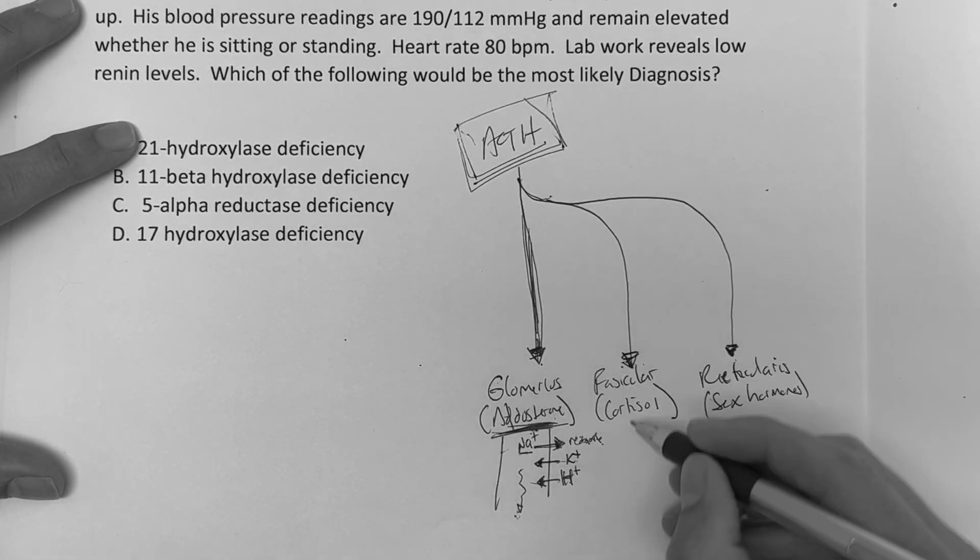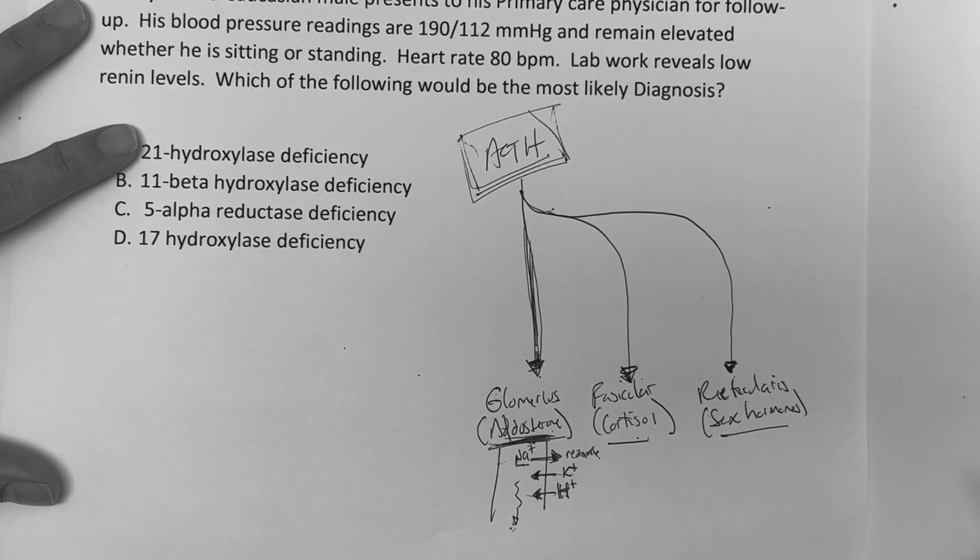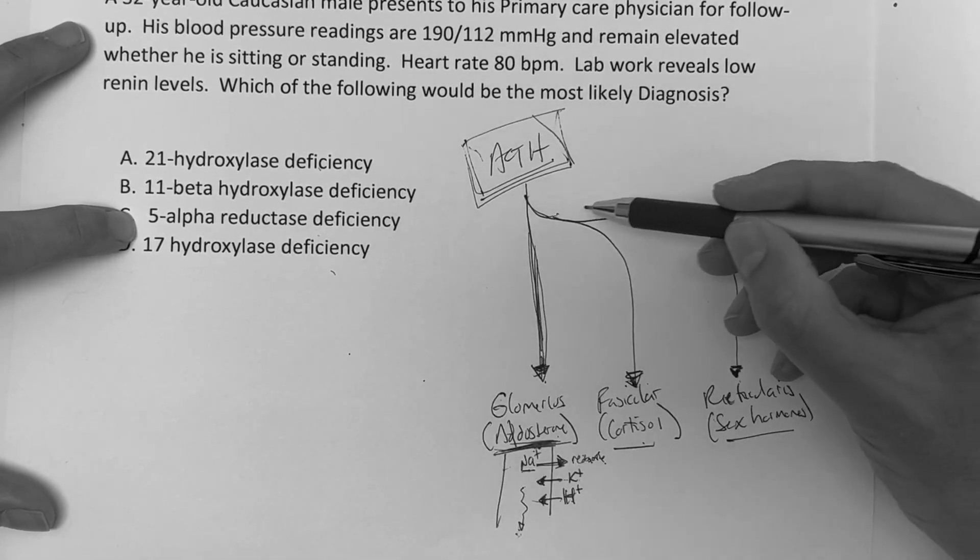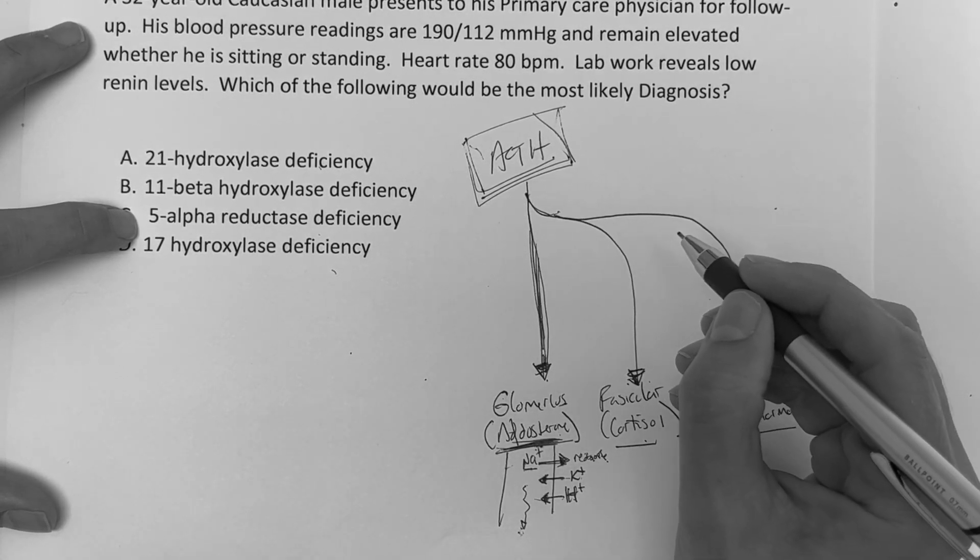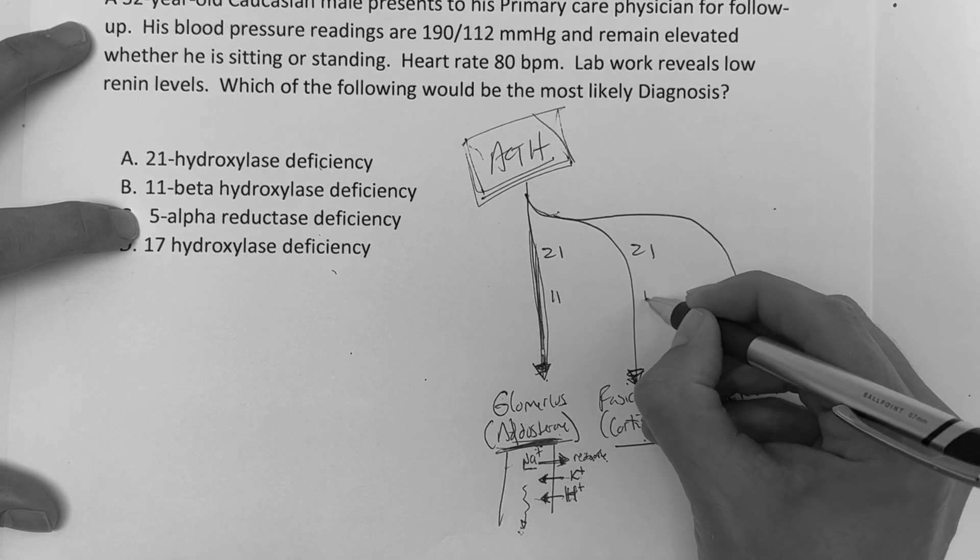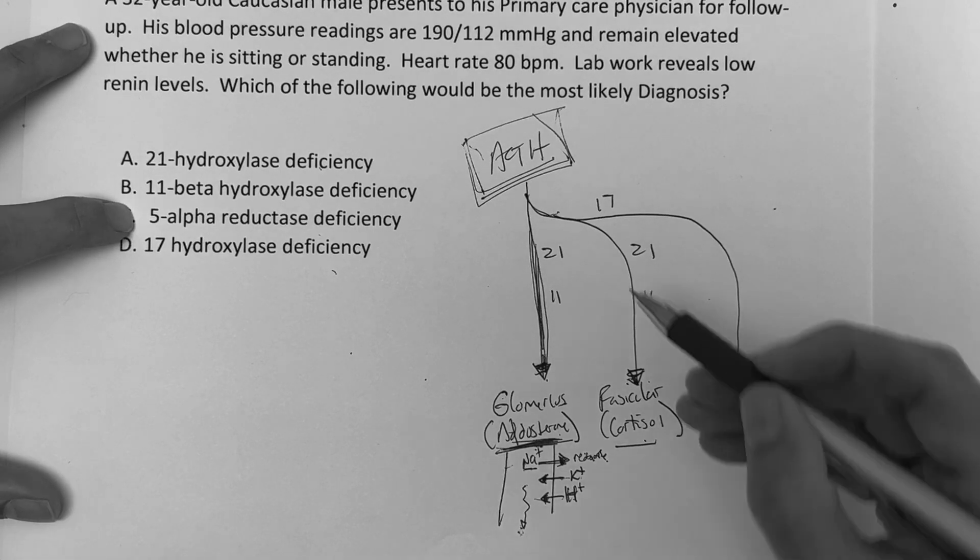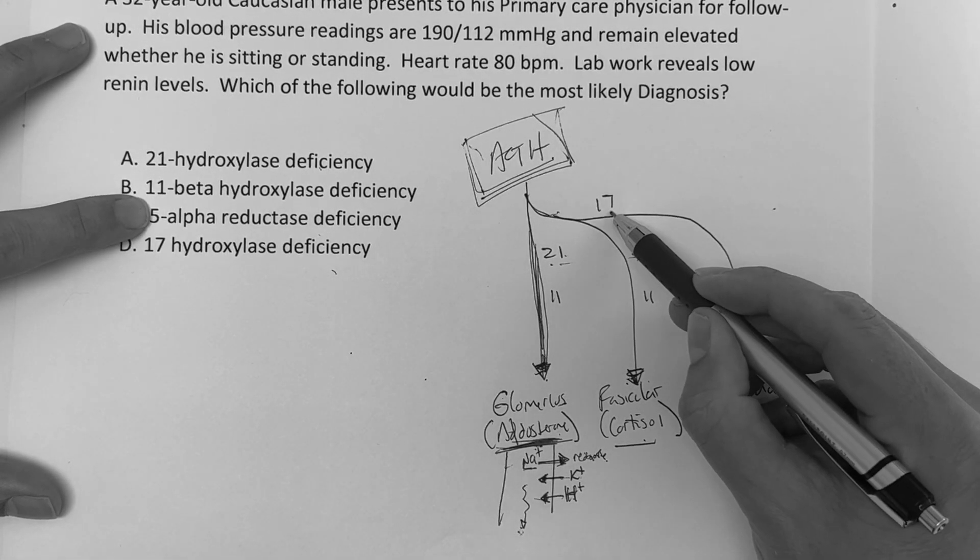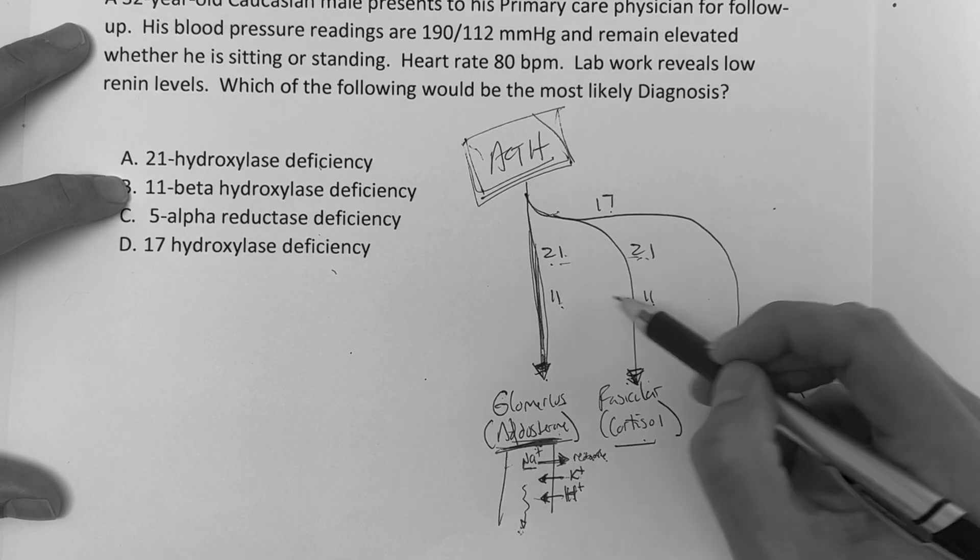So, and then again, fasciculata you've got the cortisol, and then reticularis the sex hormones. So where do these enzymes come into play? But if you know this, all you have to do is know where to put these enzymes, and it goes like this. 21-hydroxylase goes here. The 17-hydroxylase goes there, and the 11-beta-hydroxylase goes there.